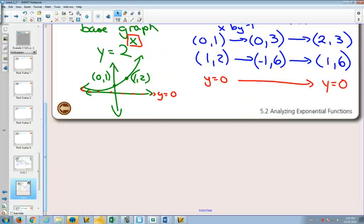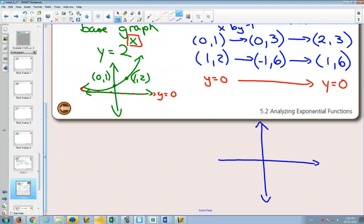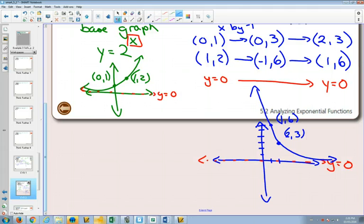So now when we go to graph this one, start with your asymptote and label it y equals 0. 2, comma 3. 1, comma 6. As I join these two together, it's going down. So it's going to approach the asymptote over here and go up over there. And we've drawn our graph.